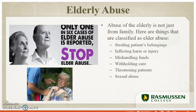The last topic in chapter 41 is elderly abuse. Abuse of the elderly by family members or caregivers may occur at home or in institutions and takes many forms — stealing patients' belongings, inflicting injury, harm, or pain, mishandling monetary funds, withholding care such as food, drink, medications, or bathroom access, sexual abuse, or threatening and confining a patient.